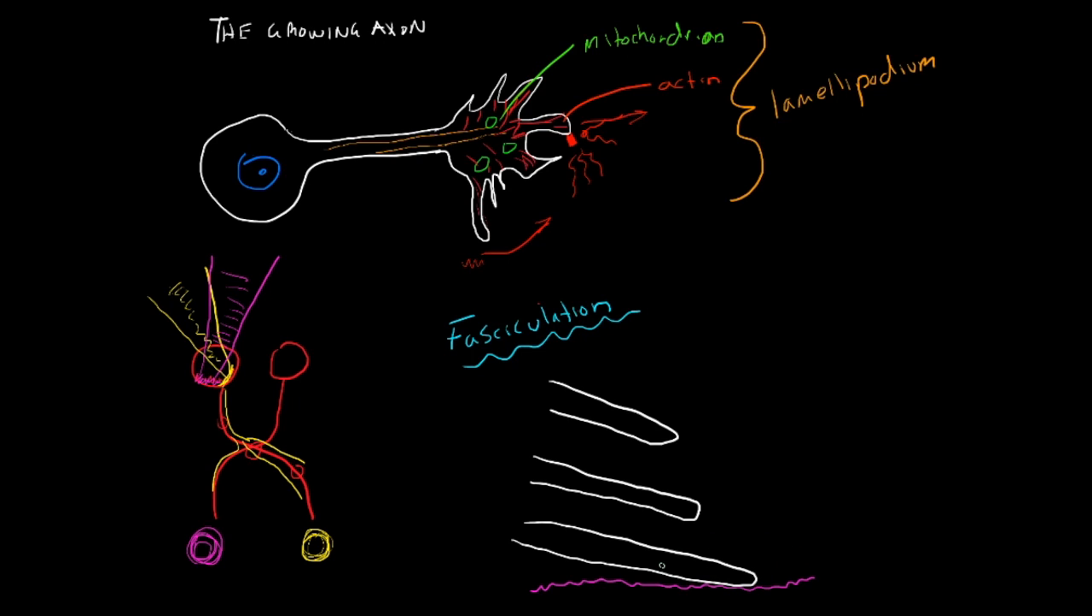And so there's laminin molecules all along here that are binding to the integrins on the axon. And then these axons up here are also interacting with each other and they're kind of growing together because these axons are going to the same place.